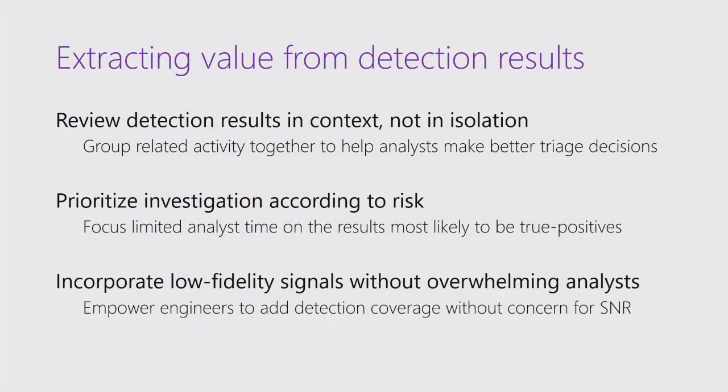To get value out of this system, I have to optimize for a couple of things — I need to solve three problems. First, my analysts need to see results in context. If I'm sorting by detection type and resolving all alert type A first and then type B next, and I'm not making connections between three different alerts that happened on the same user or host, then I'm missing the story. I'm looking at page 37 of a novel saying it looks good, ripping it out, throwing it away, but not considering the full arc.